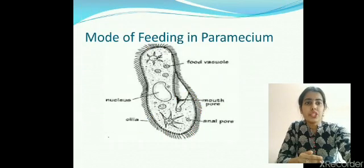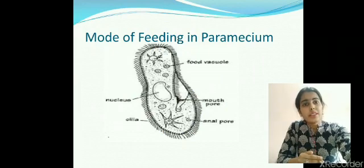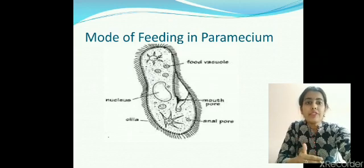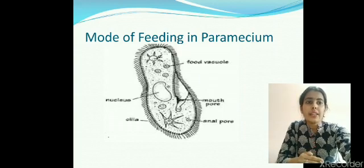Next is paramecium. Paramecium is a unicellular, slipper-shaped organism. As you can see in the picture, the outside surface of paramecium is lined with tiny hairs called cilia. These cilia have a function of movement, and they also aid the organism in trapping food particles, driving the food particle toward the mouth area of the organism.